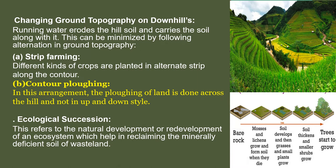Ecological succession refers to the rapid natural development or redevelopment of land. As shown in the last picture, converting barren foreign land into a lush green forest is ecological succession — whether by growing grasses, moss, shrubs, or trees — depending on the topography of the land.